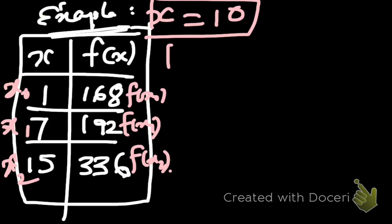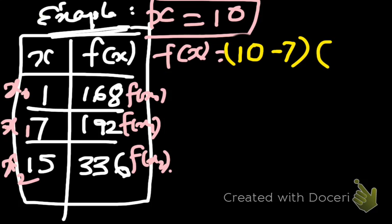Now, according to the Lagrange's interpolation formula, f of x is equal to, x is 10. The first term is going to be for x0. So, we don't write x minus x0. So, we go for x minus x1 into x minus x2.